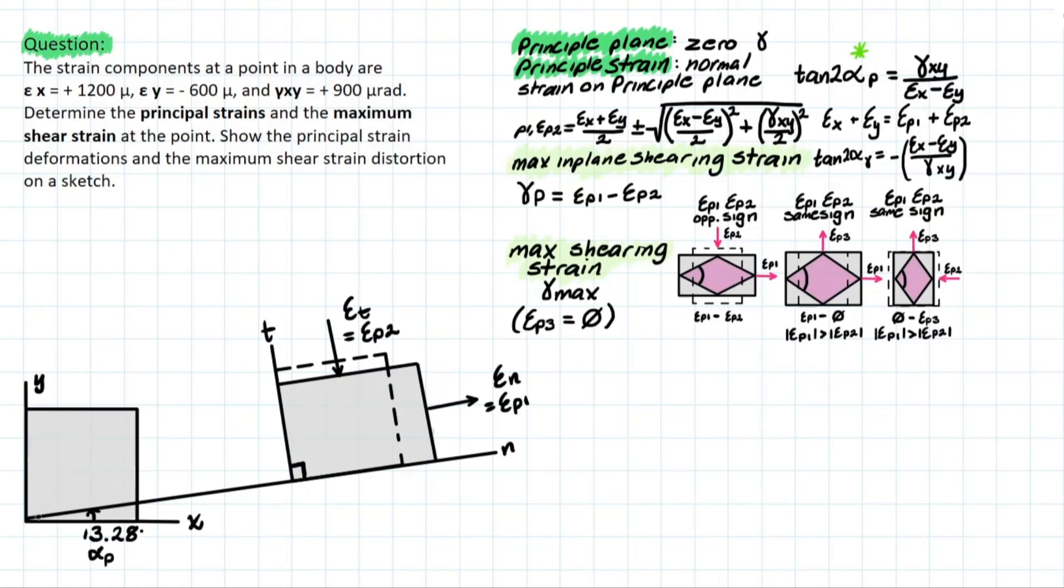All right, so now we have the new orientation for our stress element. We can see that we have a new coordinate system to consider, which is very similar to our previous video on strain transformations, where we're looking at N and T, respectively. But now we have that εT, or epsilon T, or normal strain T, is going to equal to your principal strain 2, and your normal strain with respect to N is going to be your principal strain 1.